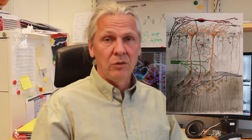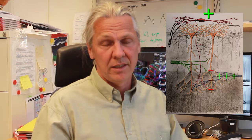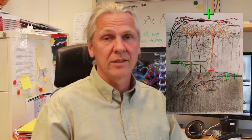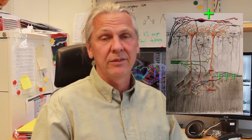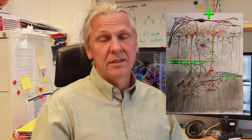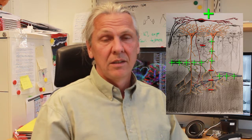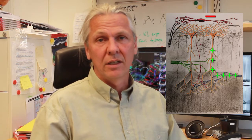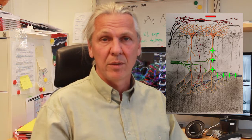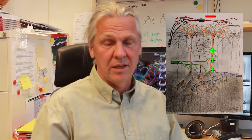We believe that the OLM-alpha2 cells act as a gatekeeper. When active, they inhibit the distal dendrite, and direct inputs from the cortex are not allowed to activate the pyramidal cell — instead, the intra-hippocampal pathway is able to influence pyramidal cell activity. If the OLM-alpha2 cells are inhibited, the direct input from the entorhinal cortex can influence pyramidal cell activity, and the recognition of novelty is enabled.